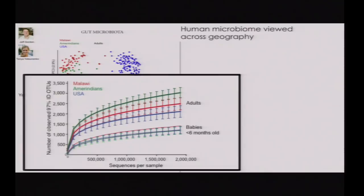We can also see that although babies had lower richness with no differences between geographic locations, in adults the U.S. had significantly lower richness relative to the other two groups, and the Amerindians had the highest richness of fecal diversity.